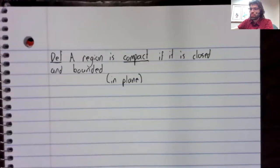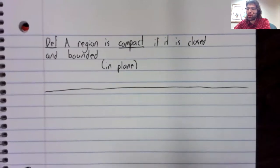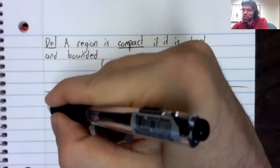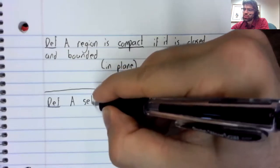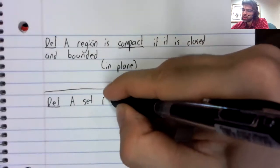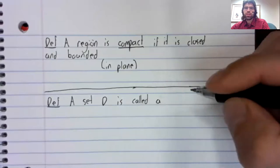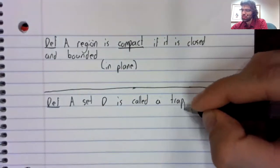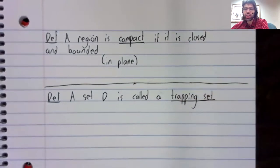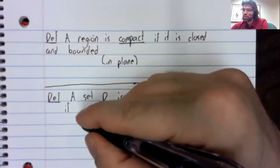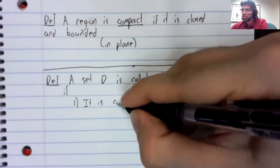And let's go ahead and give one more definition. It would make a pretty short video if I did it on its own. A set or region D is called a trapping set, a trapping region if one, it is compact.